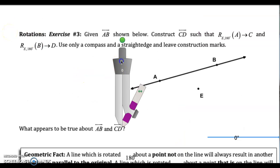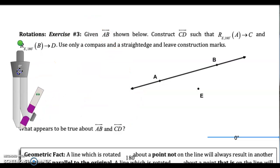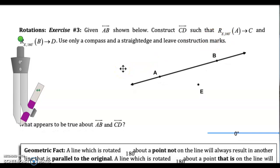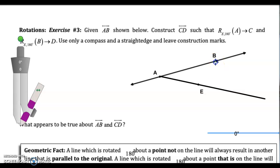Exercise three: Given AB as shown below, construct CD such that you're basically taking point A and rotating it 180 degrees to get C, and taking point B and rotating it 180 degrees about point E to get D. Use only a compass and a straight edge and leave construction marks. So what we're going to do is use your straight edge to draw a line from A through E and a line from B through E — sort of like that little crisscross right there.